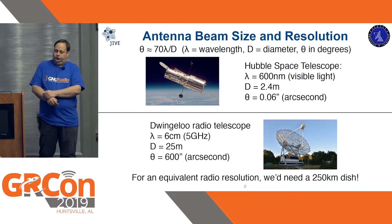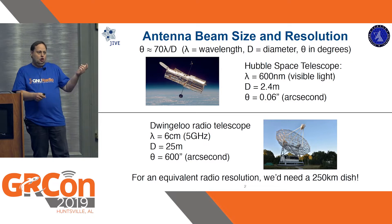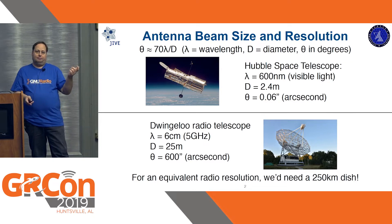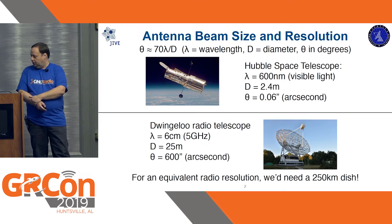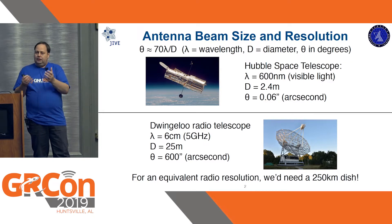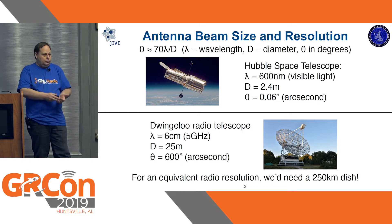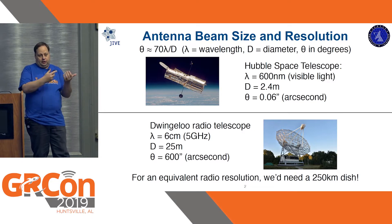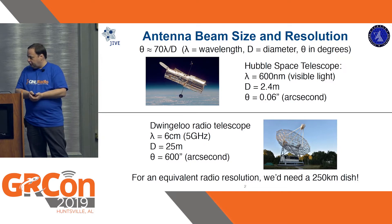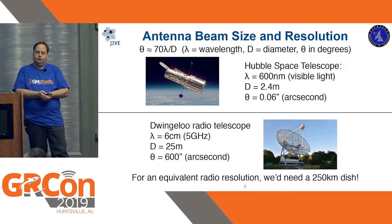With this kind of resolution you would have like four or five pixels on the full moon. So to get an equivalent resolution — to see things in the radio spectrum that you can already see in the optical — you would actually need a dish of 250 kilometers, which we can't have.